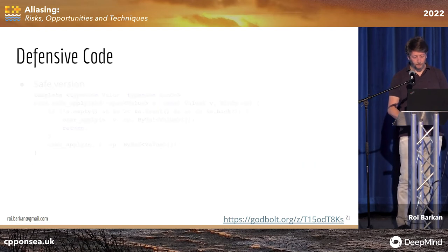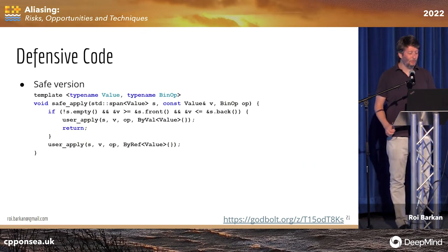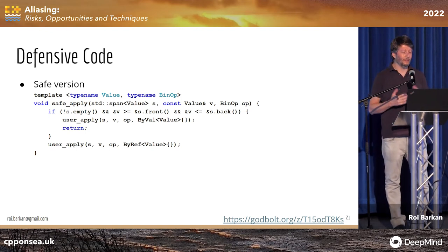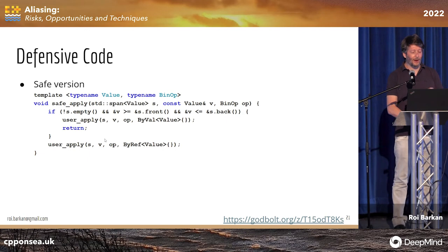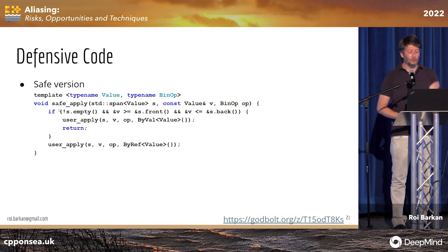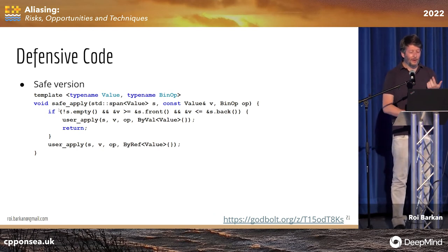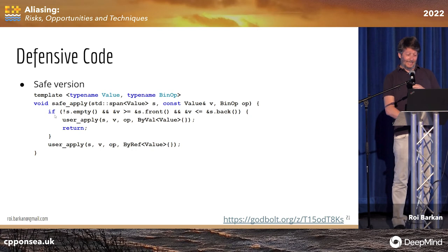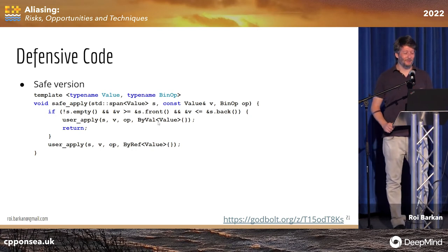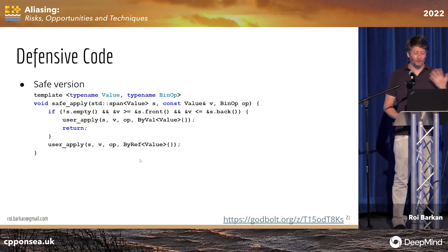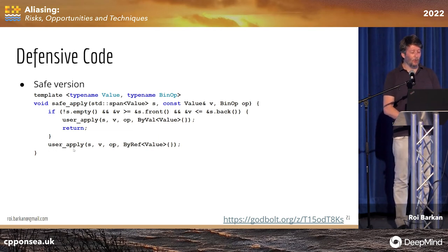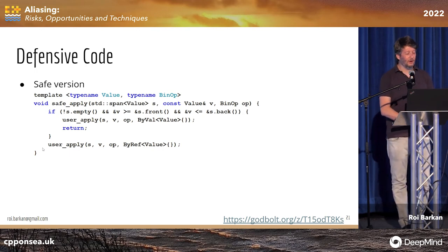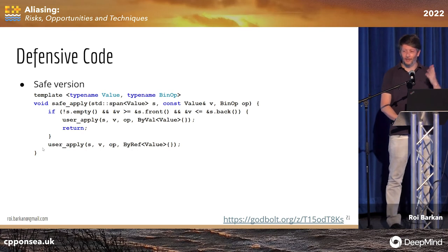Another option is to write a safe implementation that checks at runtime whether aliasing took place. I start with an if statement checking whether variable V is inside the span. If it's inside the span, I make a copy and run with that. Otherwise, I can go by reference and things should be good. And if the compiler is nice enough, it might also optimize the second call knowing there is no aliasing.